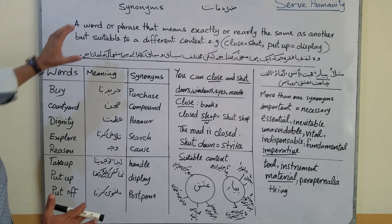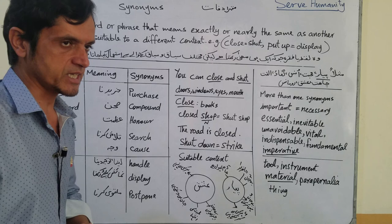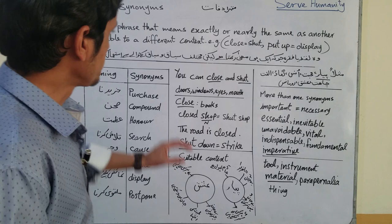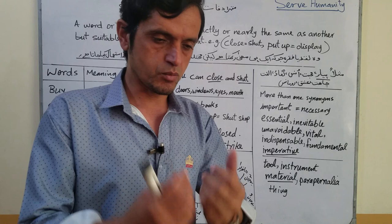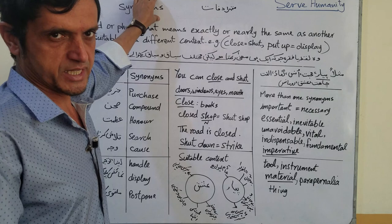So yeh toh English mein is ka definition hai. Ab Urdu mein is ka definition hai: woh lafz ya fikra jo aik hi mana rakhta hai lekin mukhtalif siyaaq-o-sabaaq ke hawalay se istemaal kiya jaata hai. Ager aap mukhtasar andaz mein synonyms ki definition samajhna chaahte hain, toh ap is tarah bhi keh sakte hain: synonyms are the words of the same meaning.